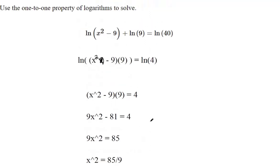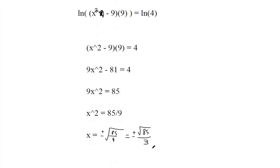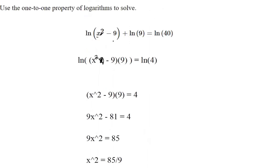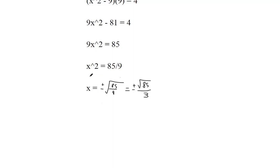So those are our two solutions. You always want to check your solutions because you can't have a logarithm of a negative number. But if I plug in negative square root of 85 over 3, it gets squared and becomes positive anyway, so this is our solution.